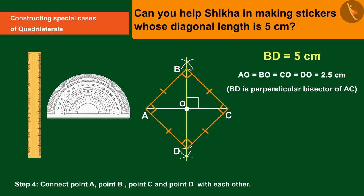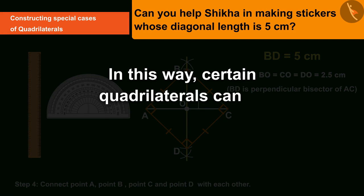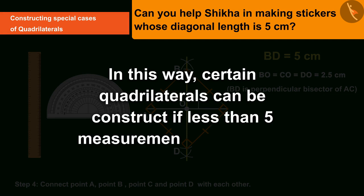So in this way, we can also make quadrilaterals with less than five measurements.